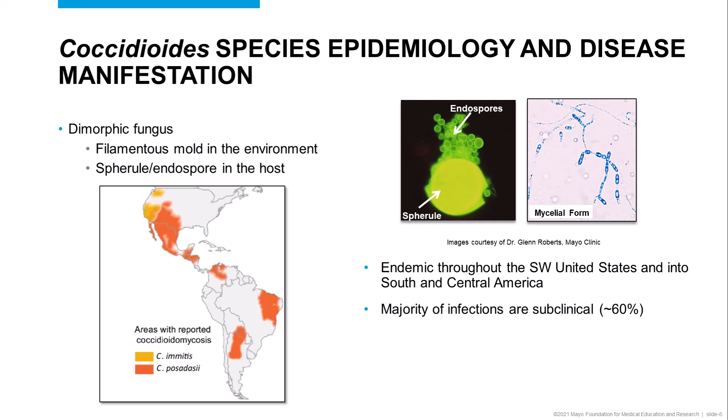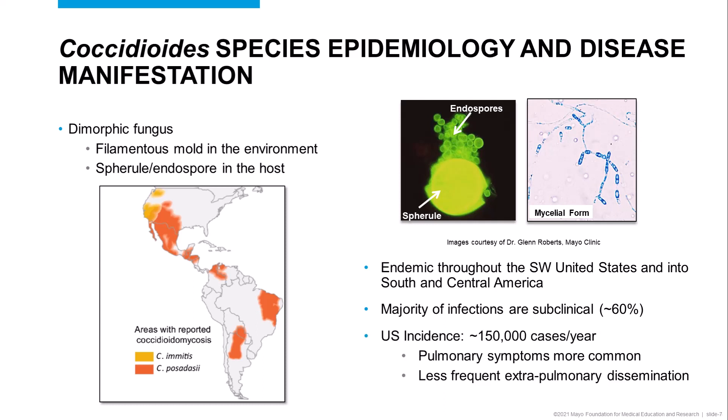Coccidioides posadasii is also widely found throughout Central America and into South America, as you can see on the map. Clinically, the majority of infections — roughly 60% — are largely asymptomatic. However, certain populations are at a higher risk of manifesting disease, including those individuals that are immunocompromised. In the United States, approximately 150,000 cases are documented annually, with patients primarily presenting with pulmonary symptoms.